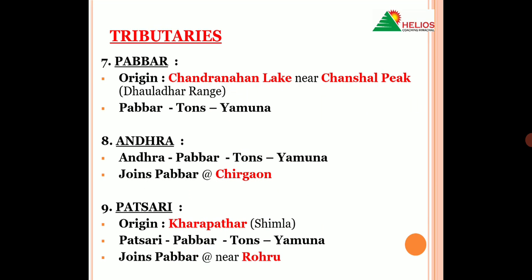Agli tributary hai Yamuna ki, Pabbar nadhi, jis ka origin hota hai Chandra Nahan Lake se, Chanchul Peak ke nazilik — aur Chanchul Peak jo hai wo Tholadhar range ka ek hissa hai. Yaad rakhne wali baat yeh hai ki Pabbar directly Yamuna mein nahi girti. Pabbar nadhi Tones mein girti hai, aur phir further Tones Yamuna mein girti hai. Exam mein dono tarike se bhi puchha jata hai — kari baar Pabbar directly Yamuna ki tributary ke roop mein puchha jaata hai, aur kari baar Pabbar konsi river system ka part hai, toh it is the part of Yamuna river system in Himachal Pradesh.